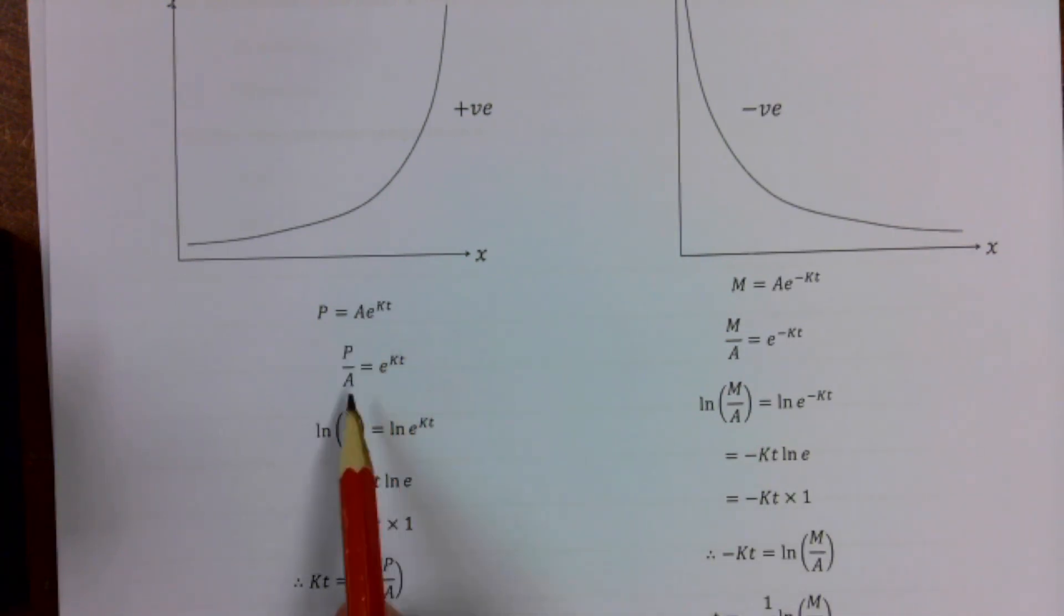I'm going to divide by A first of all. Then I'm going to take logs of both sides. Now because we have an E there, if I take the natural log, which is my LN function, then I'm going to have LN(P/A) = LN(e^(kt)).